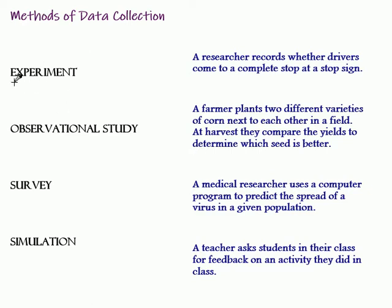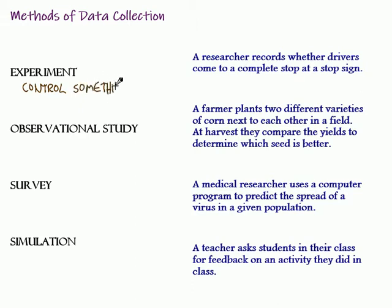An experiment is where we control something. This person is going to be given this treatment and this person is going to be given a placebo or a fake treatment. We might hear the term a control group — that is definitely an experiment. We control something, we try something, and maybe there are a couple different options and we see which one does better. You might compare two different detergents for washing your clothes, something like that.